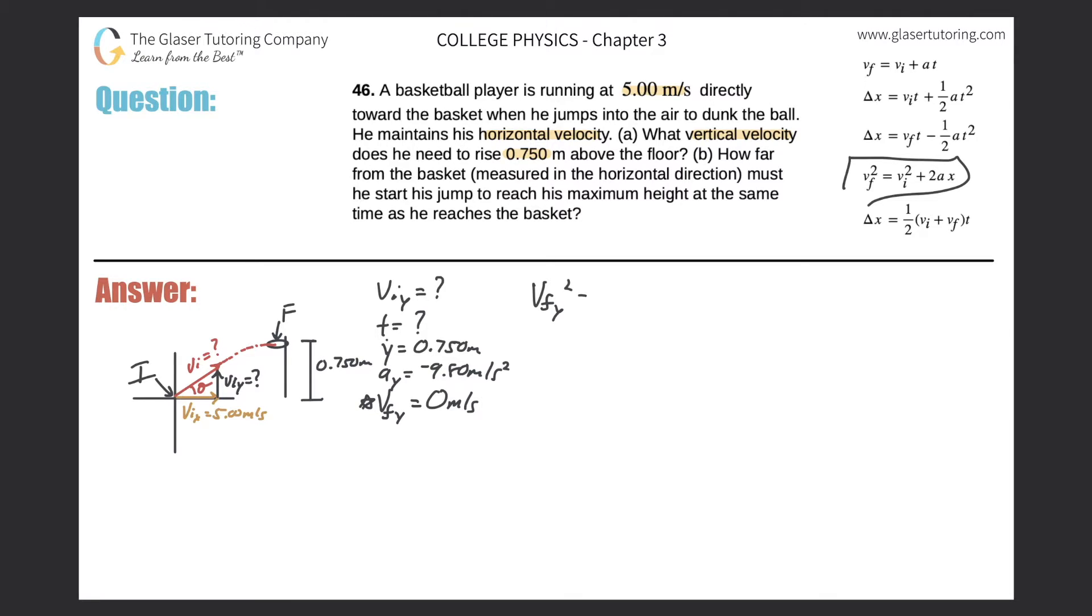The final velocity in the y direction squared will be equal to the initial velocity in the y direction squared, plus 2 times the acceleration multiplied by that displacement in the y direction. So the final velocity we said should be 0. The initial is what we're looking for, multiplied by 2 times the acceleration, and that's negative 9.80, multiplied then by the displacement in the y, which is 0.750.